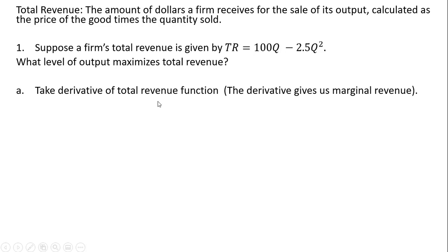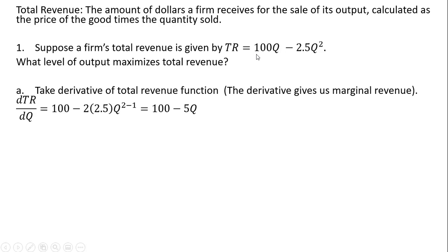Step one is to take the derivative of the total revenue function — by the way, this derivative would be marginal revenue. Taking the derivative: the derivative of 100Q is 100. For the second part, we bring the exponent down in front, so it's 2 times 2.5, and subtract 1 from the exponent. So minus 2 times 2.5 gives us minus 5, and 2 minus 1 leaves us with 1, so we can write minus 5Q.